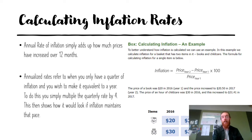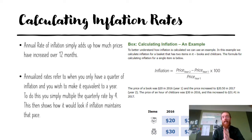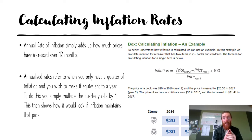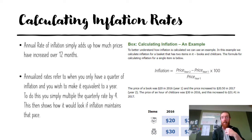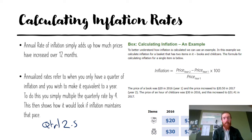In terms of calculating inflation, annual inflation simply adds up how much prices have increased over 12 months — it's usually the four quarterly inflation rates all added together. Sometimes you'll be asked about an annualized rate of inflation. An annualized rate takes one quarter and makes it equivalent to a year by multiplying by four. So if we had 2.5% as quarter one and wanted to annualize that, we'd multiply by four, giving a 10% annualized rate of inflation.